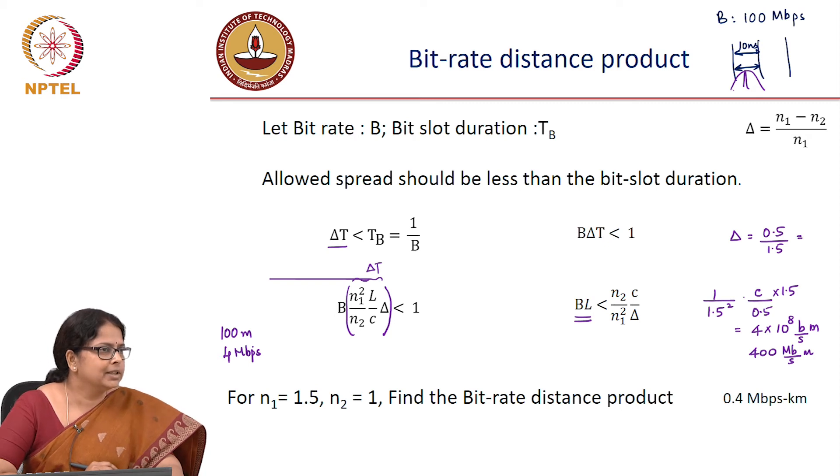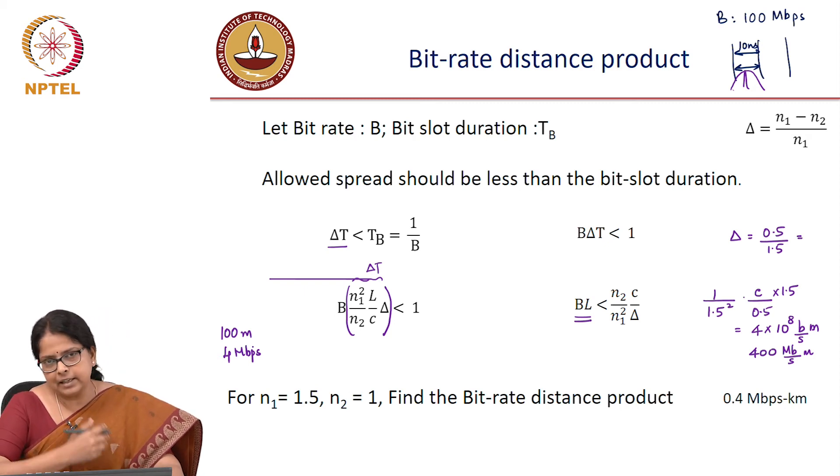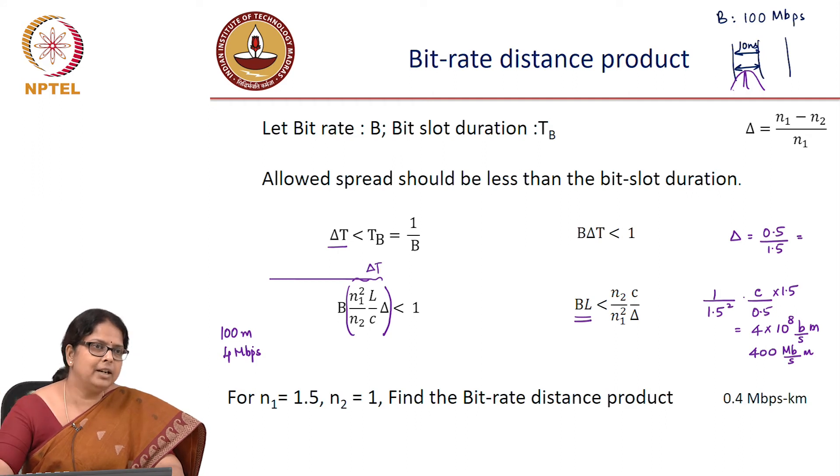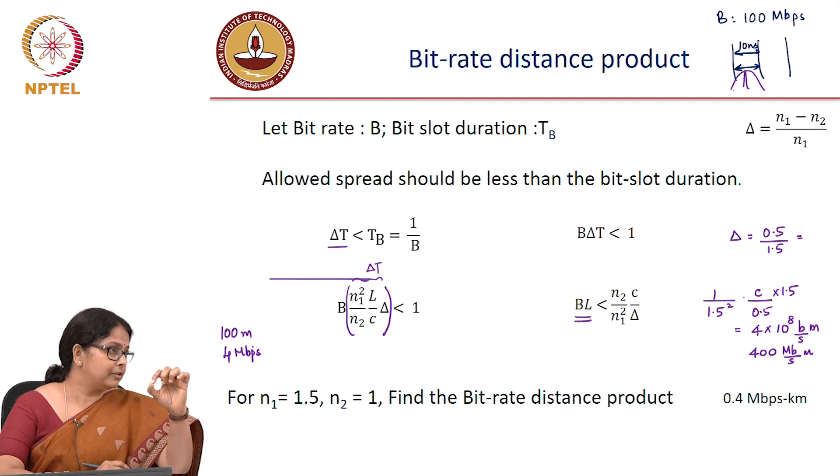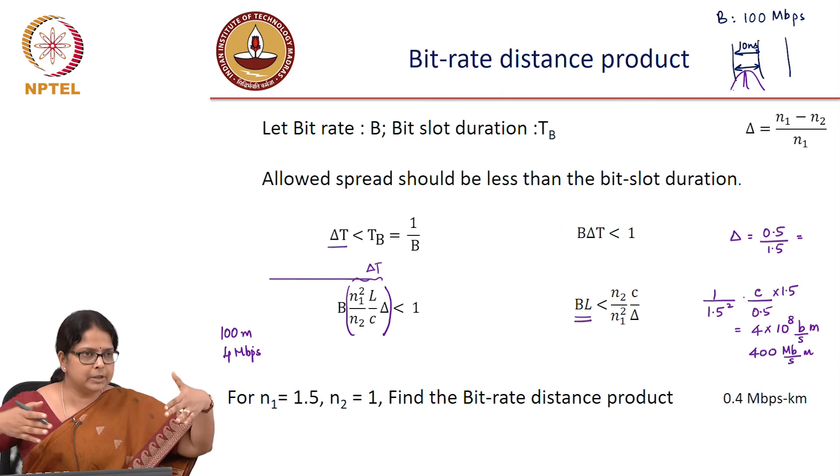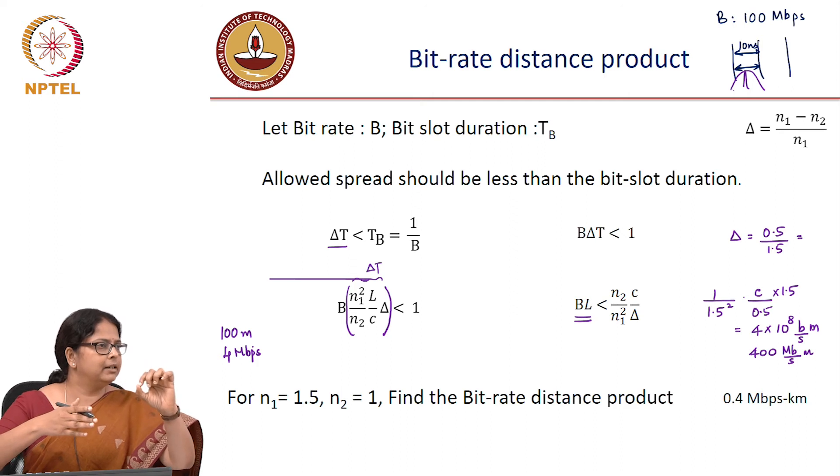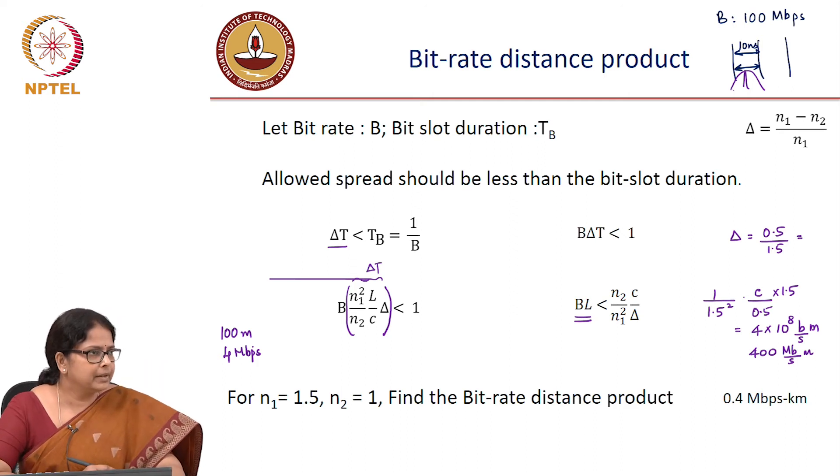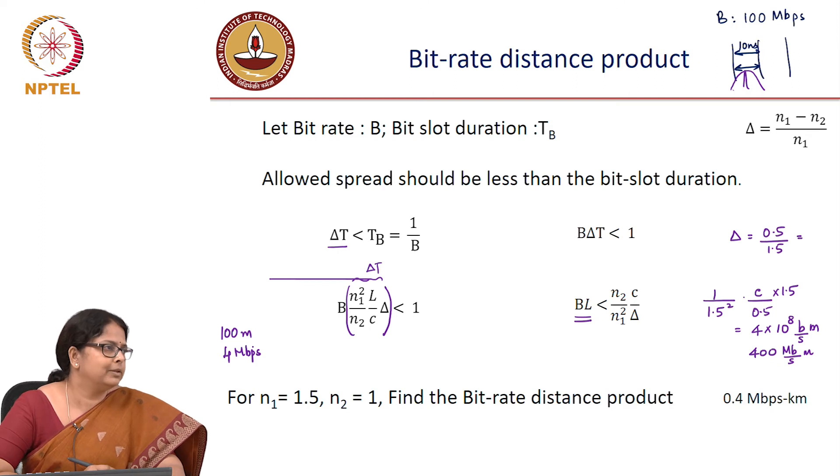And interestingly, it is not depending on the core diameter. I can just take a cylinder of glass and I can transmit 0.4 mbps in 1 kilometer. That is what this means. It can support any number of modes, arbitrarily large number of modes. But this is what, it is not depending on the diameter of the core, it is depending only on the contrast of refractive index.